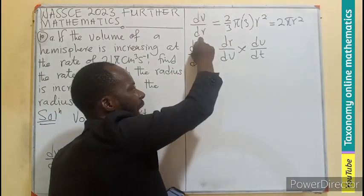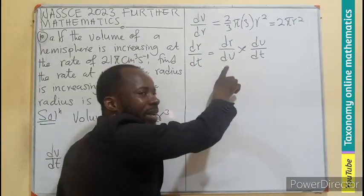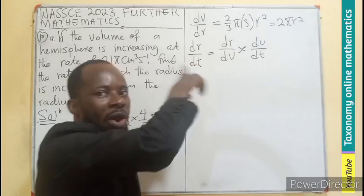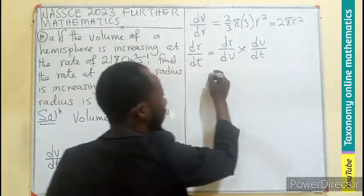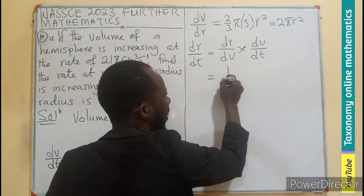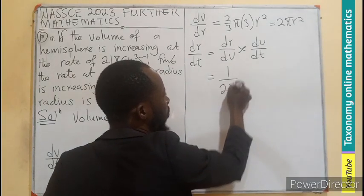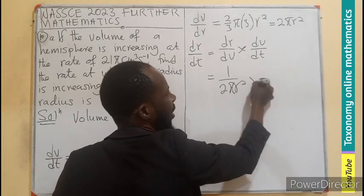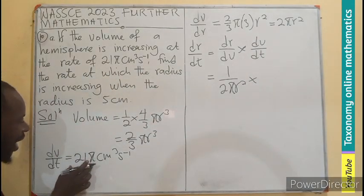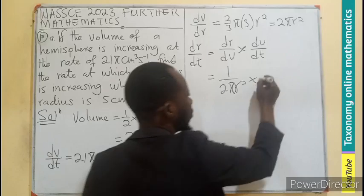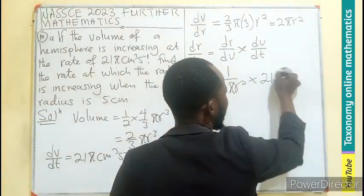We have dV/dR. But this is just a reciprocal of what we have. So we write this as a reciprocal, which is 1/(2πR²) times dV/dT, which you already know as 21π. So that would be 21π.